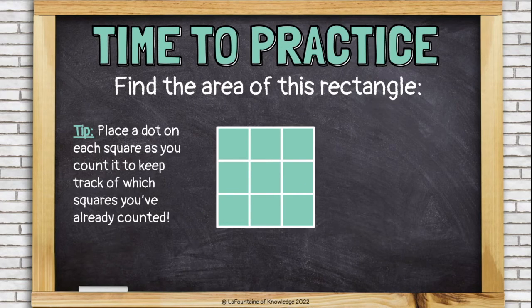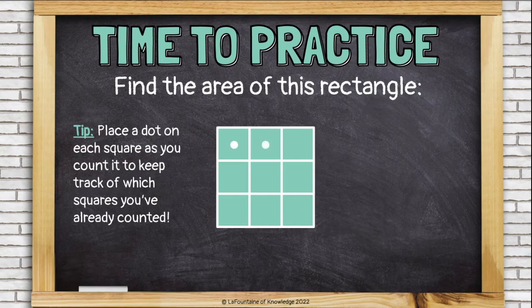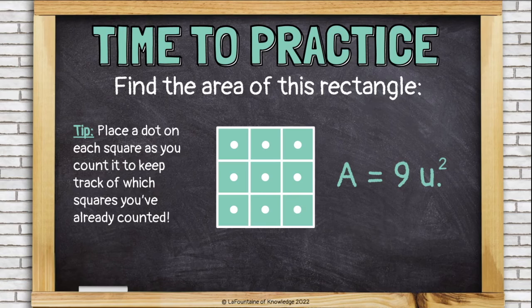Let's try one more area problem. When you're doing this on paper, a good tip is to place a dot on each square as you count it to keep track of which squares you've already counted. 1, 2, 3, 4, 5, 6, 7, 8, 9. This shape has an area of 9 square units. Remember, area is how much space fills the inside of the shape, so if we count how many squares fit inside the rectangle, we have found the area.